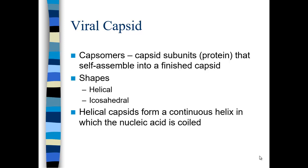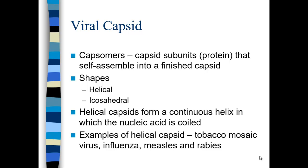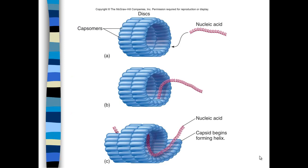A helical capsid forms a continuous helix directly around the nucleic acid. Icosahedral capsids also envelop a helical nucleic acid but have more of a spherical structure. Examples of the helical capsid include the tobacco mosaic virus, influenza, measles, and rabies.